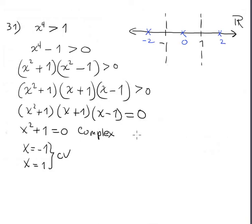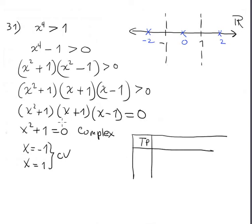Let's set up the sign chart. We include only the relevant factors. One factor is always positive so it doesn't add extra information. The important factors are (x + 1) and (x - 1), plus one extra column for the total sign.